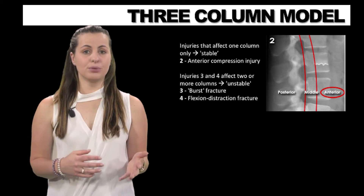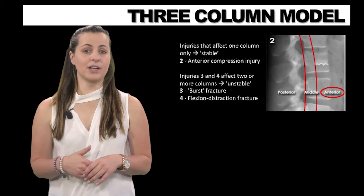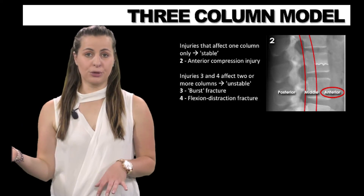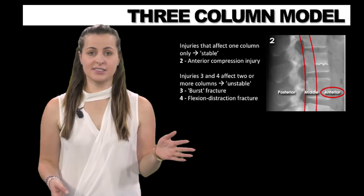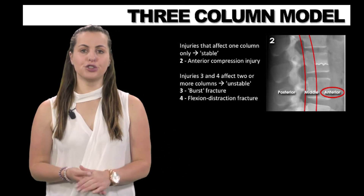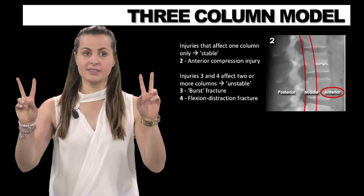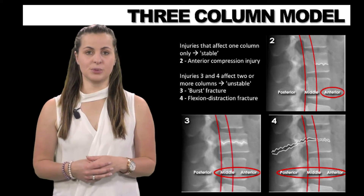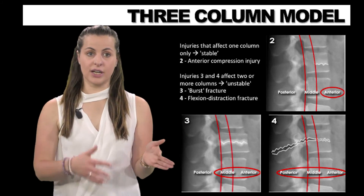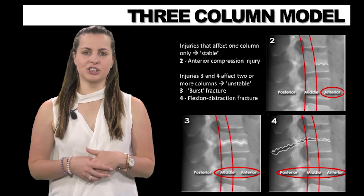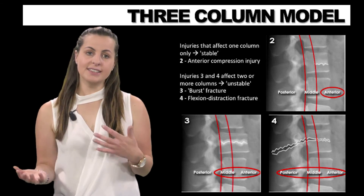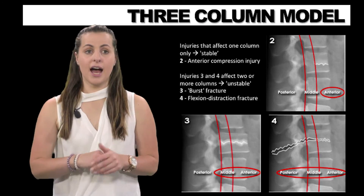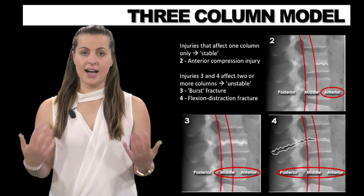Looking at examples of basic thoracolumbar spinal injury classification: a one-column injury — such as an anterior compression fracture or isolated spinous process fracture — involves only one column and is considered stable. A two-column injury, such as a burst fracture, implicates the anterior and middle columns. A three-column injury, such as a flexion-distraction or Chance-type fracture, implicates all three columns — anterior, middle, and posterior — and is thus considered unstable.